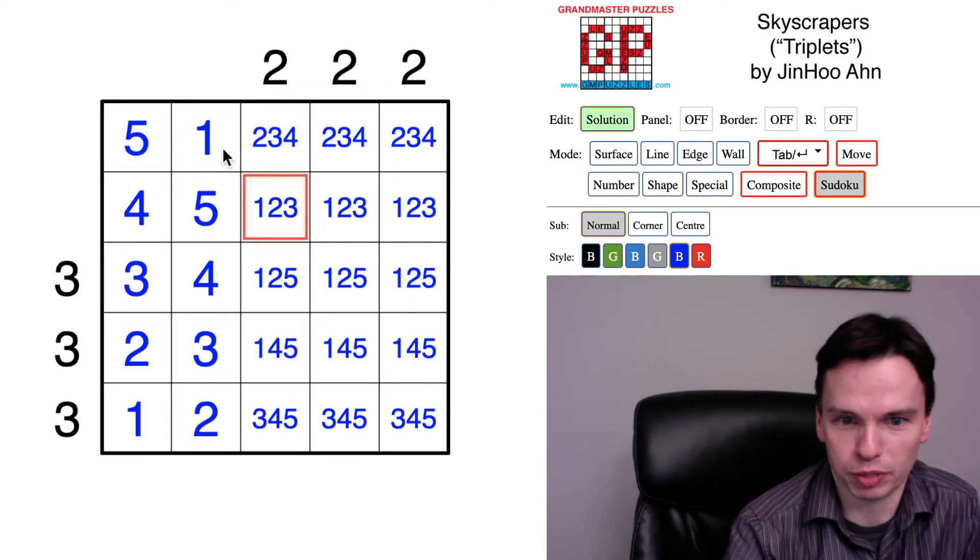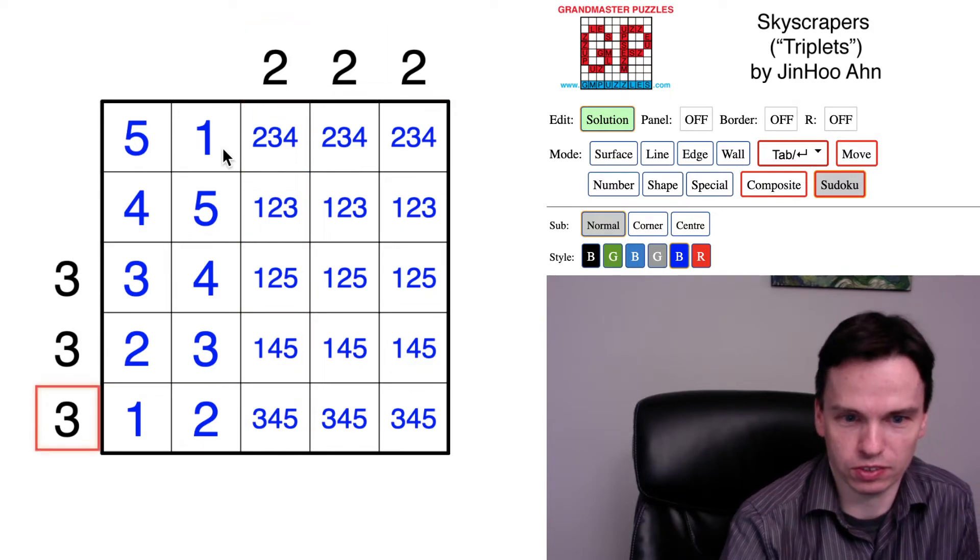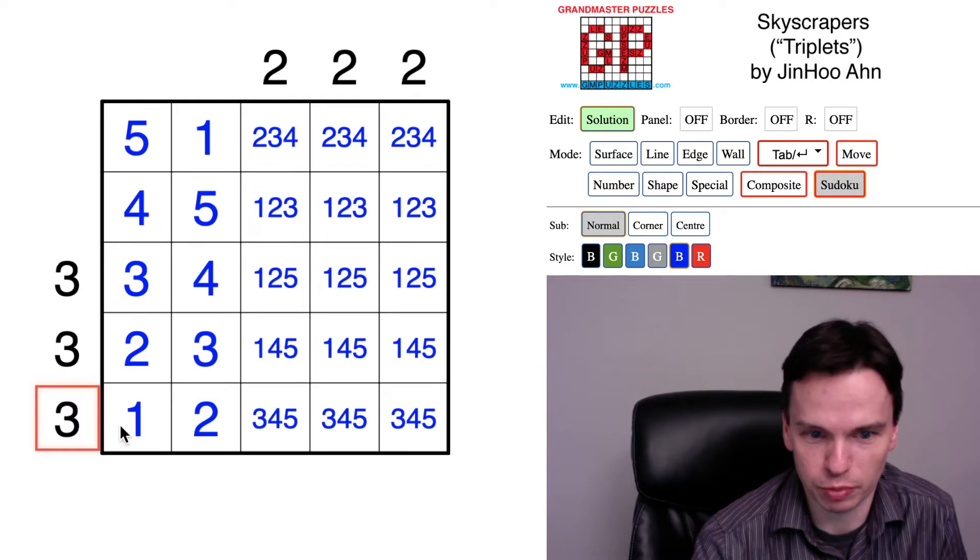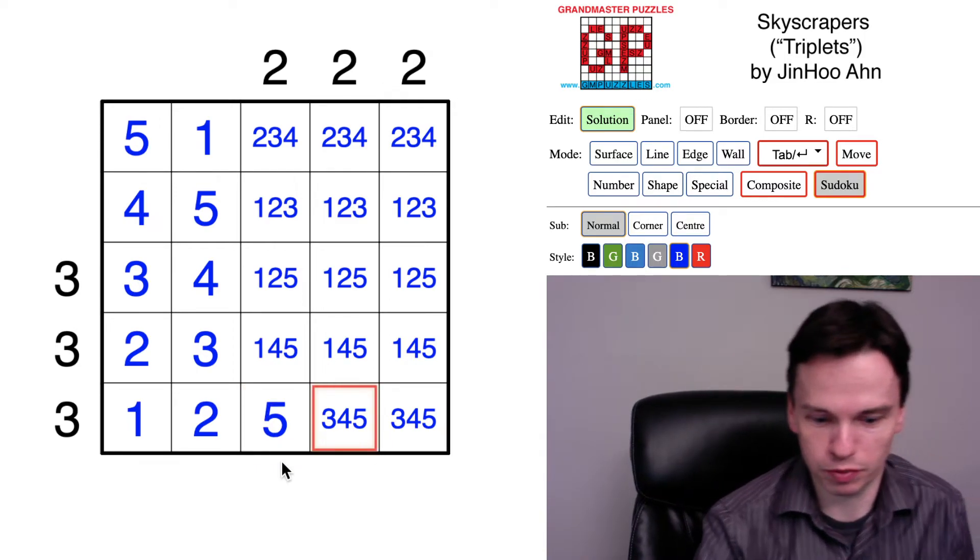And now to finish the puzzle and to order these different columns, we have to look now back at the horizontal clues to start us out. If this three at the bottom sees three buildings, one and two can be first, but we've got to finish seeing buildings from there. Three and four must be hidden.